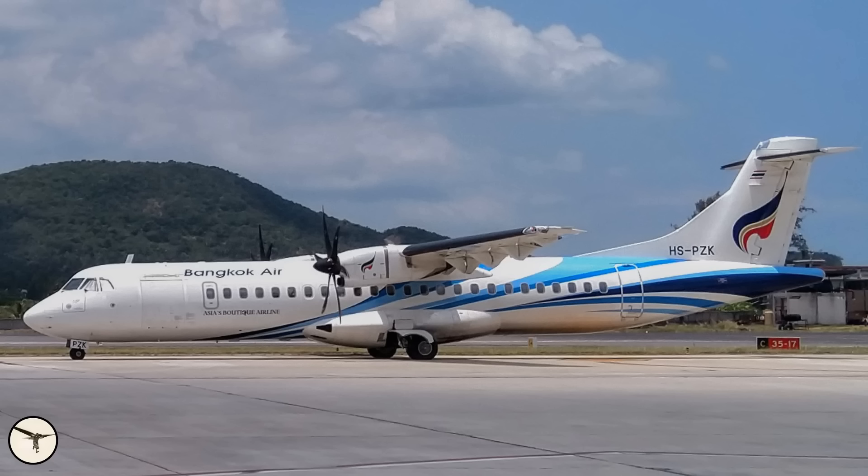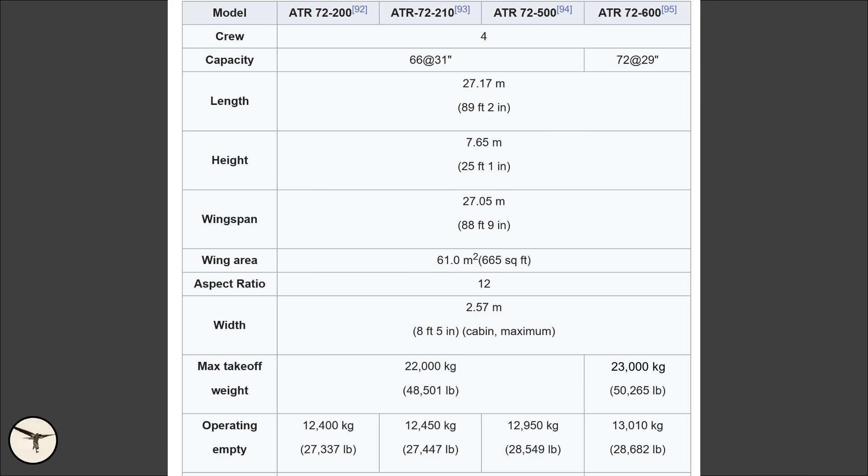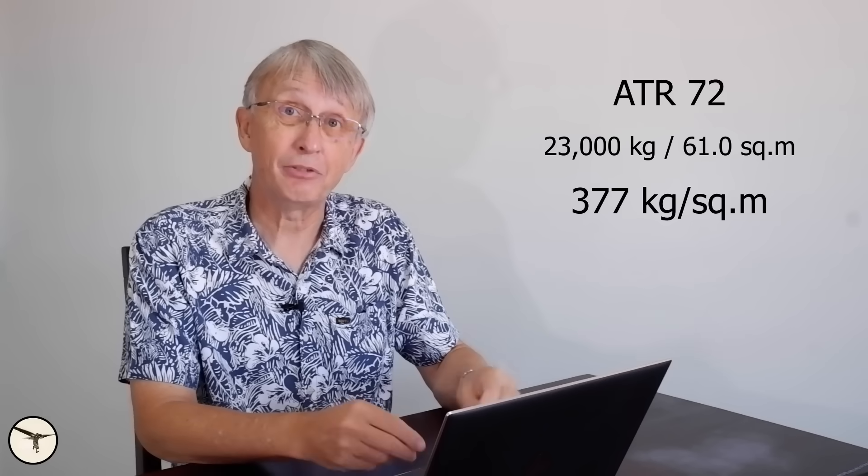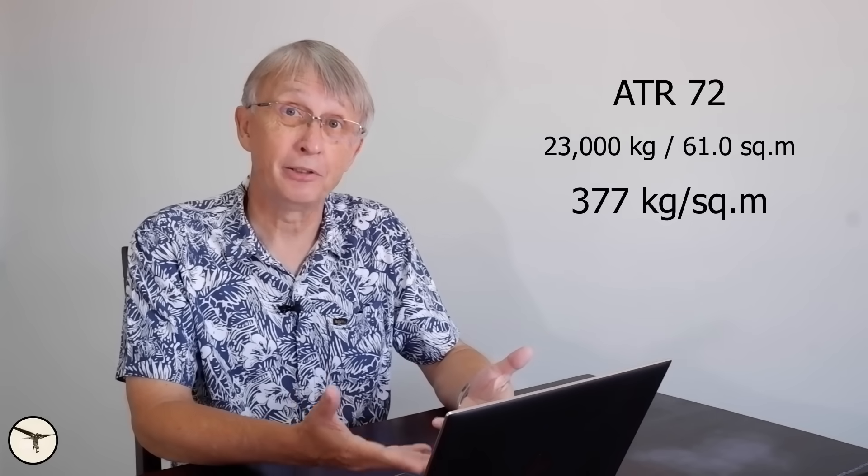In the 70 to 80 seat category we have the ATR-72. It has a wing area of 61 square meters and a maximum takeoff weight of 23,000 kilos, representing a wing loading of 377 kilos per square meter.